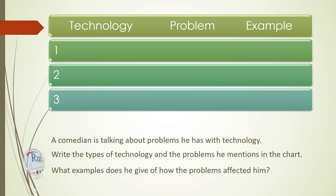The convenience of technology? Listen to a comedian talk about problems he had with technology. Write the types of technology and the problems he mentions in the chart. Listen again. What examples does he give of how the problems affected him? Complete the chart.